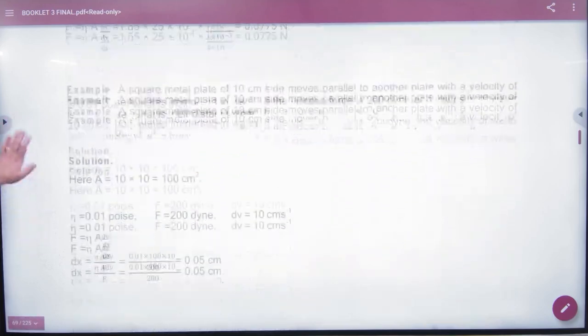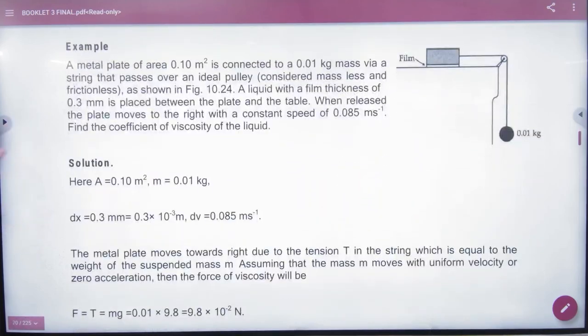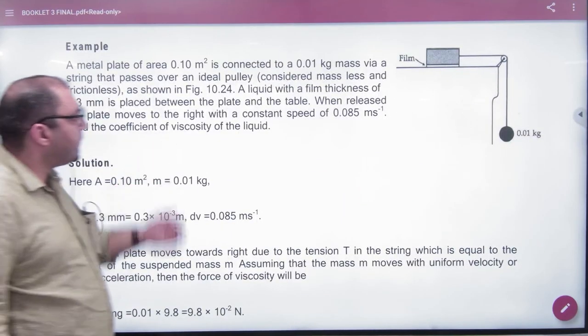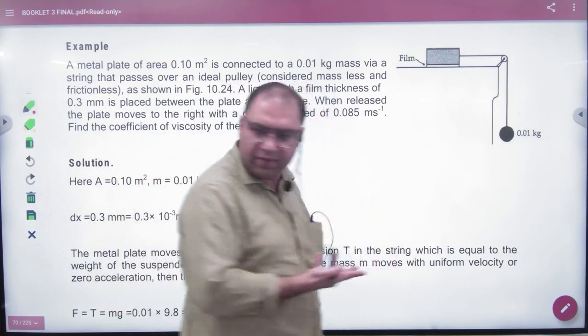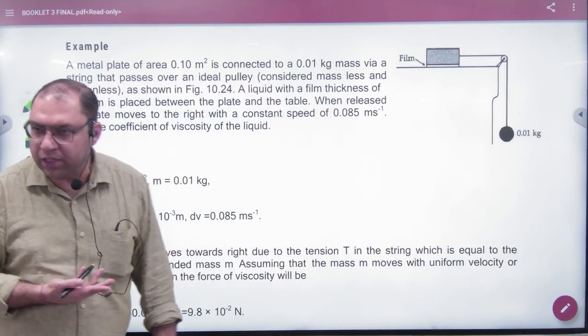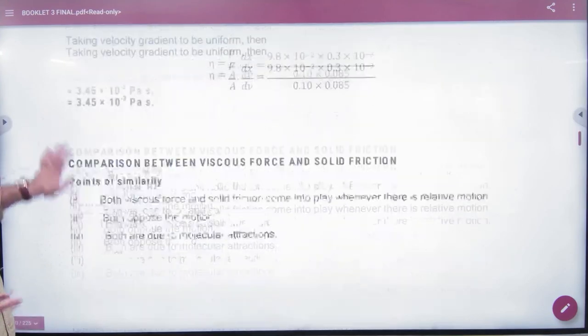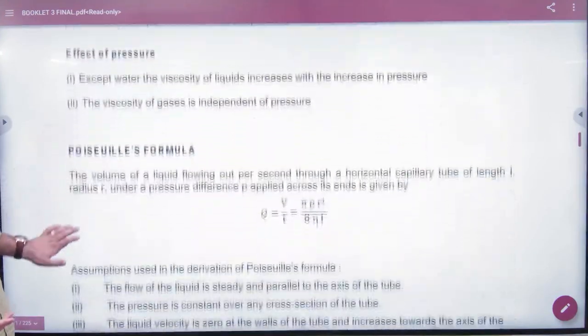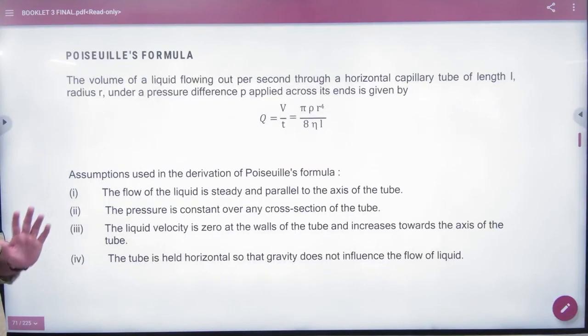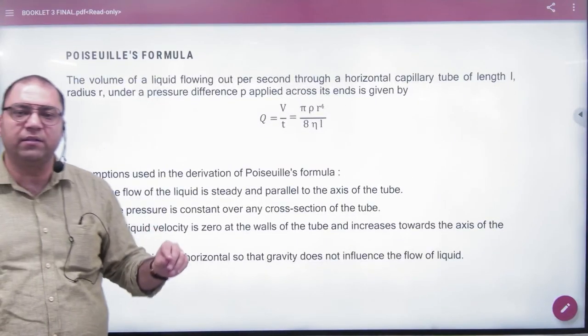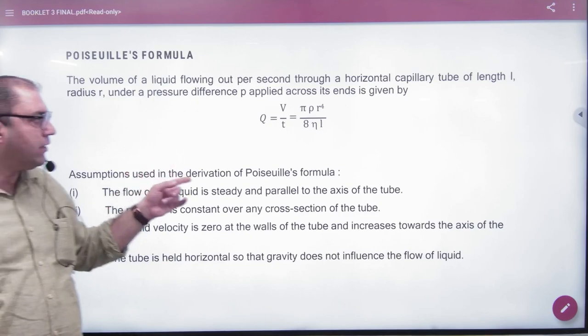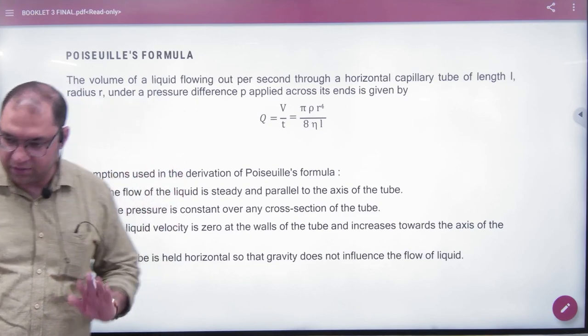The second formula of viscosity - we covered this in NCERT, how to use this formula. Based on this, the other formula is Poiseuille's formula. Volume flowing per second in any pipe is π/8 × (tr⁴)/(ηL). We've covered this.